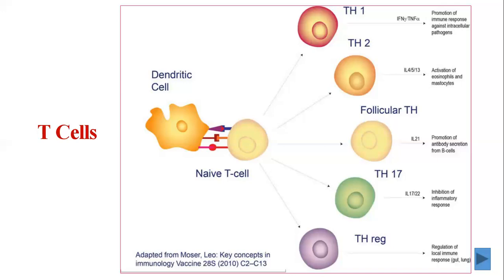An individual T cell can be activated by a peptide antigen for which it expresses the specific receptor. The T cell receptor can only interact with MHC molecules of its own tissue type. This quality is described as self-restriction and ensures that only cells of the same organism will interact to mount an adaptive immune response. T cells are activated by antigen-bearing dendritic cells.